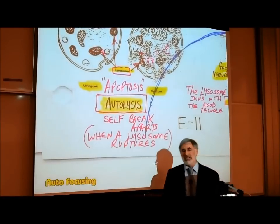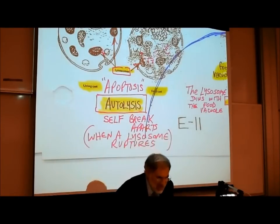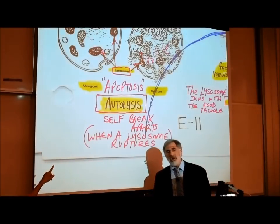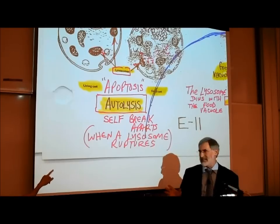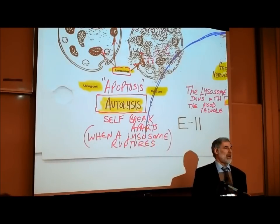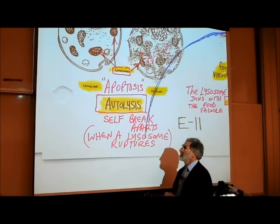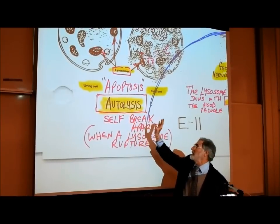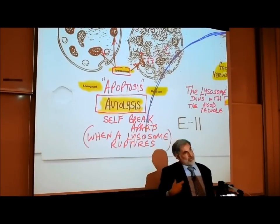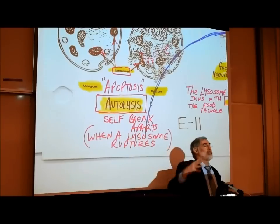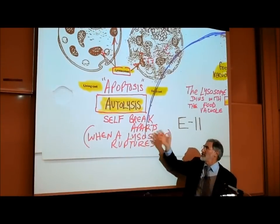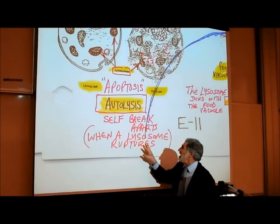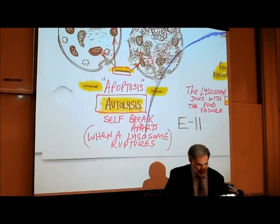This phenomenon of a cell basically committing suicide — the term used in textbooks — is apoptosis. We're going to call it autolysis, which is an easier word to spell and explain. Autolysis is made up of two roots: auto, meaning self, and lysis, meaning to break apart. So it literally means to break apart itself — that's what happens when the lysosomes rupture and the cell self-destructs.